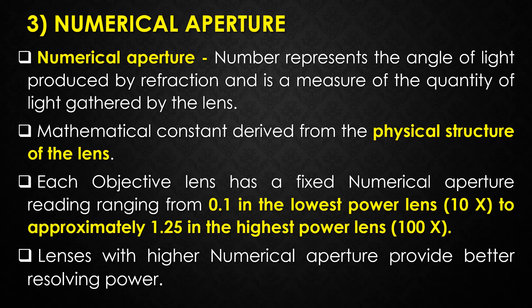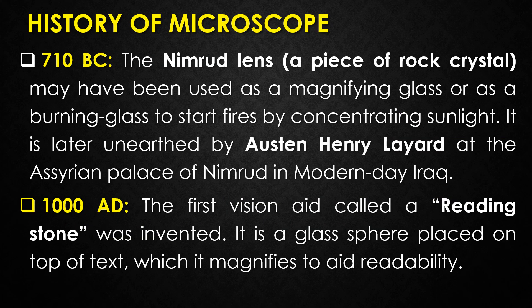The history of the microscope started in 710 BC with the Nimrud lens. The Nimrud lens is a piece of raw crystal that may have been used as a magnifying glass or as a burning glass to start fires by concentrating sunlight. It was later unearthed by Austin Henry Layard at the Assyrian palace of Nimrud.